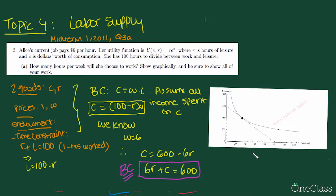Part A asks how many hours per week will she choose to work. Show graphically and be sure to show all of your work. So we've got two goods C and R, prices one for C because we're assuming the price of all other consumption is normalized to one, and W which is wage, and that's the value of our leisure. Our endowments are given by our time constraint, which is R plus L equals 100 hours, which means the number of hours worked L equals 100 minus R.